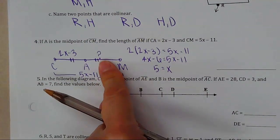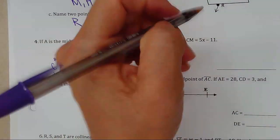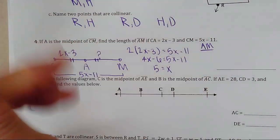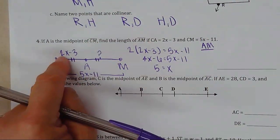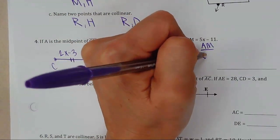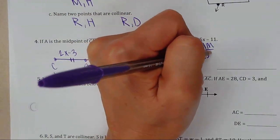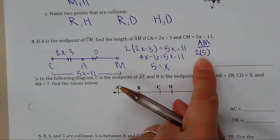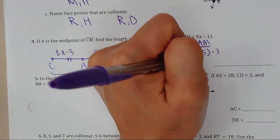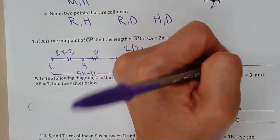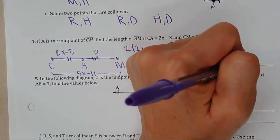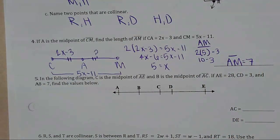Solving gives x equals 5. To find AM, plug x back into 2x − 3: 2(5) − 3 = 10 − 3 = 7. So AM equals 7.